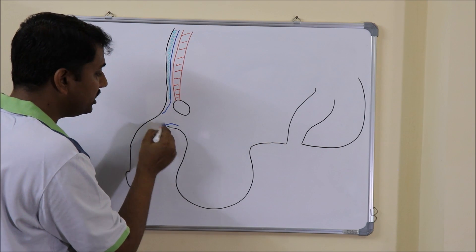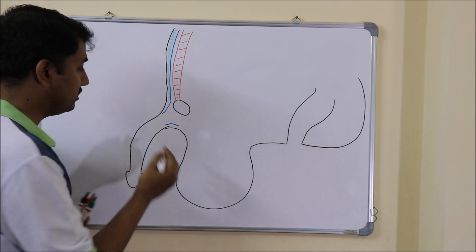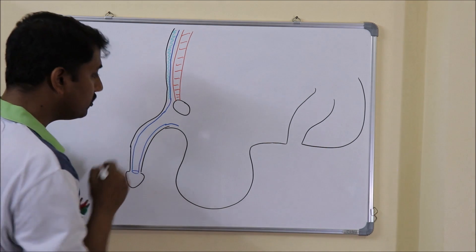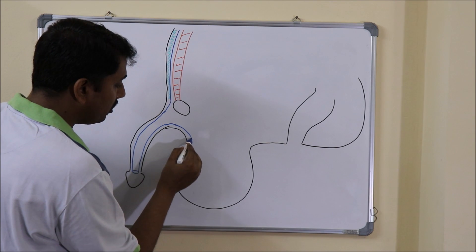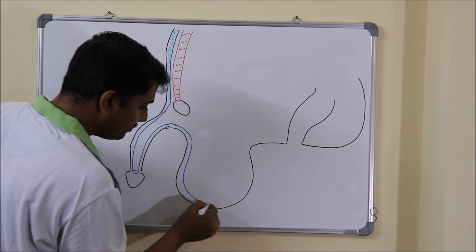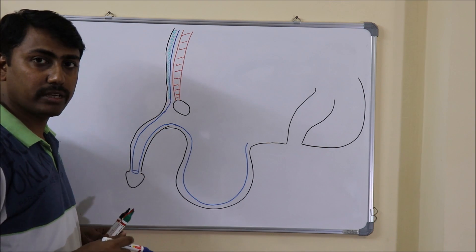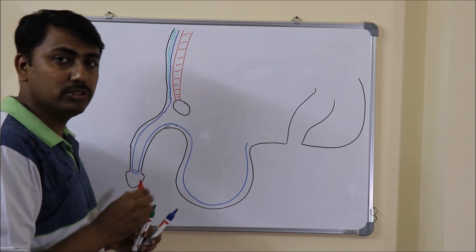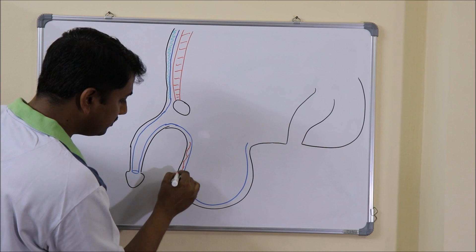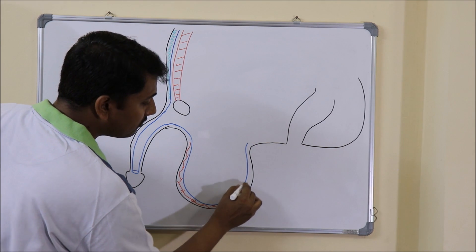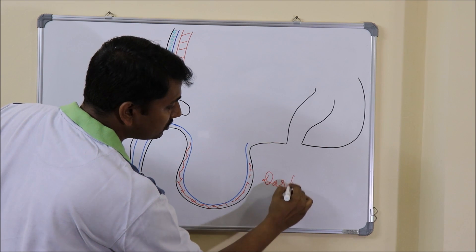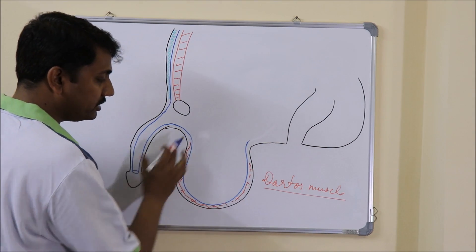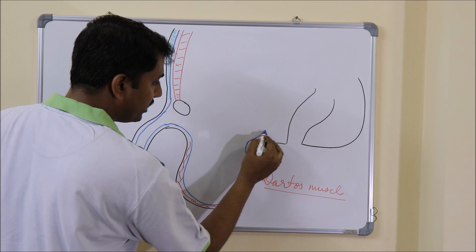Over the anterior surface of the pubic bone, the membranous layer continues over the penis as a tubular sheath known as the penile sheath, and covers the penis all around. Then it will enter into the wall of the scrotum, where the fatty layer gets modified to form a layer of smooth muscle known as the Dartos muscle.